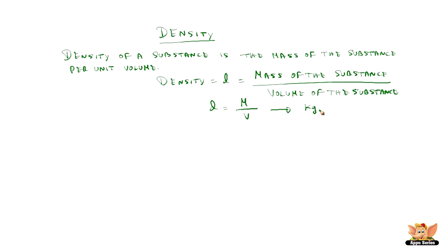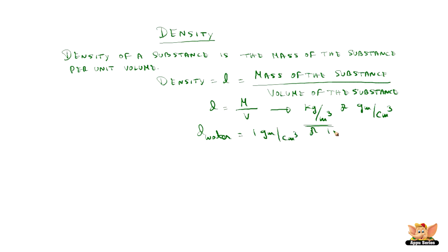The units for density are either kg per meter cube, or if you take it in grams, it is grams per centimeter cube. The SI unit for density is kg per meter cube. The density of water, which we must know, is 1 gram per centimeter cube or 1000 kg per meter cube. That means 1 centimeter cube volume of water will have a mass of 1 gram, and 1 meter cube volume of water will have a mass of 1000 kg.